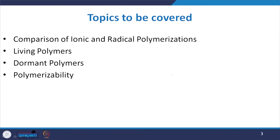In this particular lecture, we are going to discuss about the comparison between ionic and radical polymerization. We will have a discussion about the living polymers, and thereafter we will discuss about the dormant polymers and polymerizability of all these living and dormant polymers.